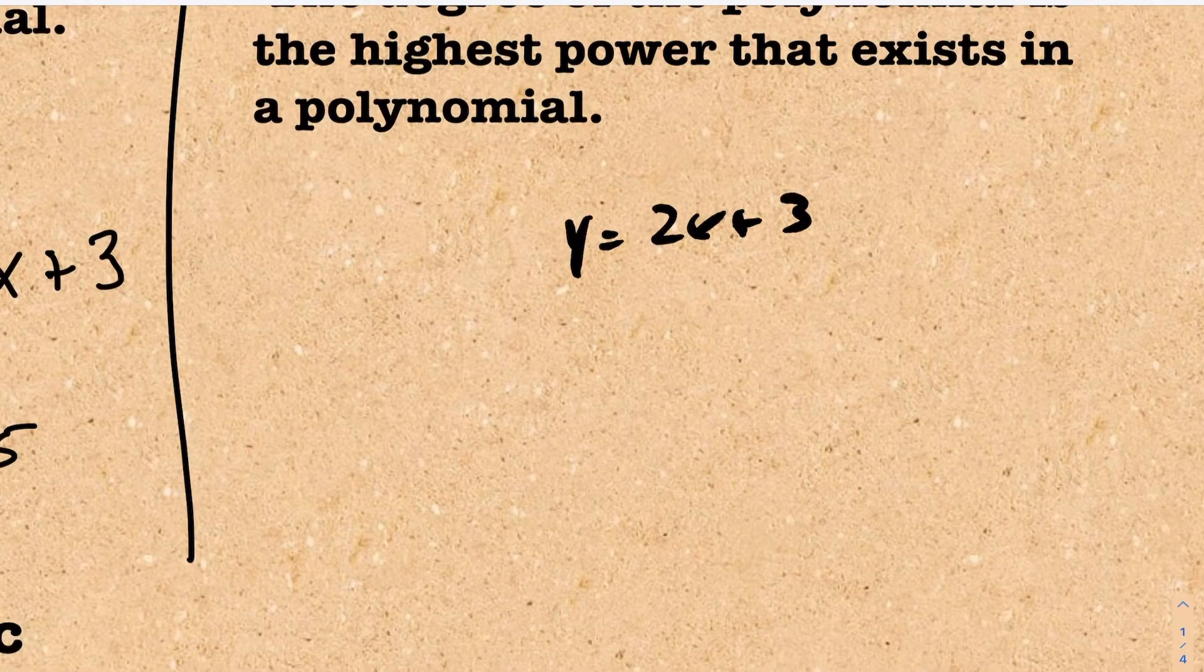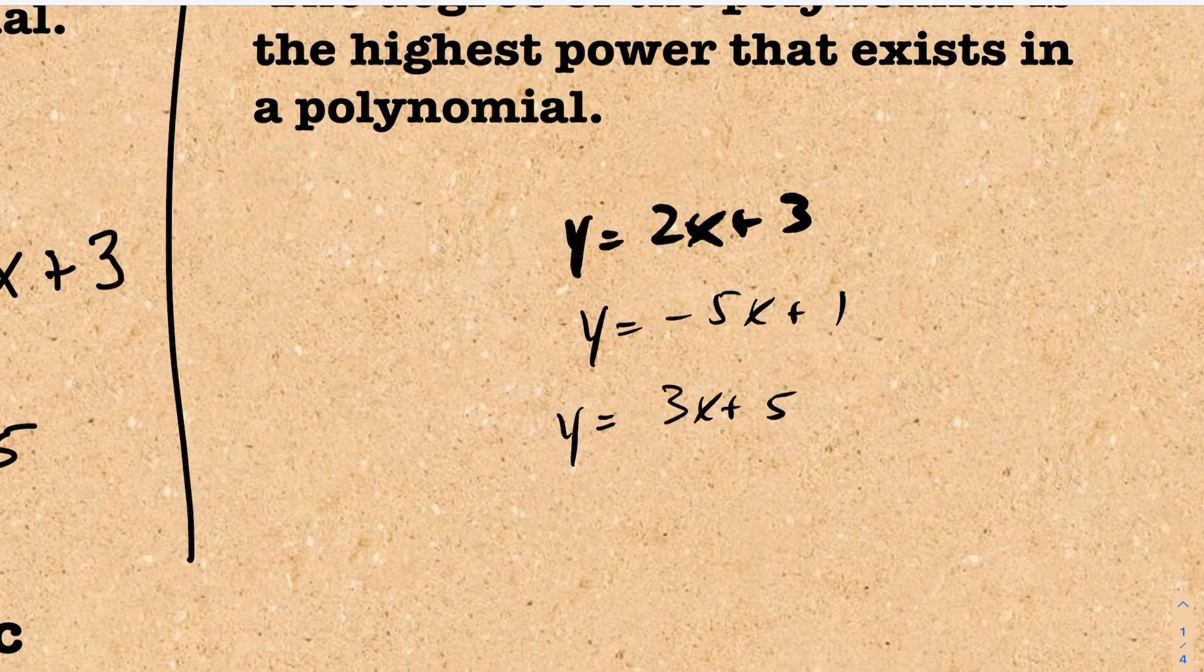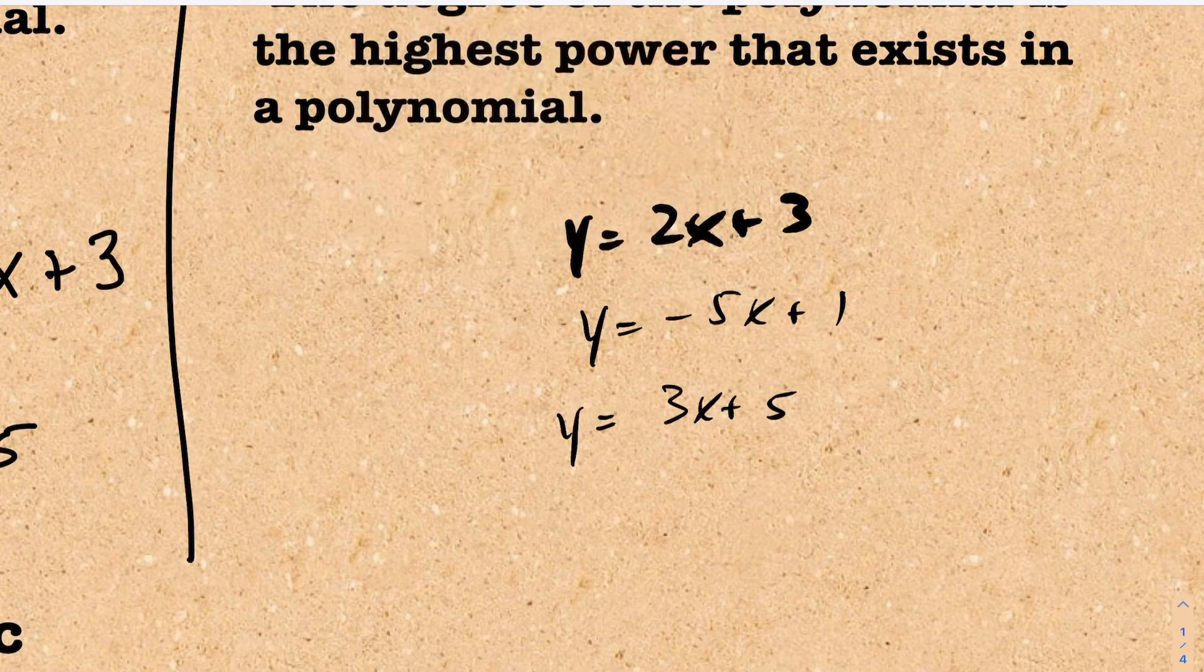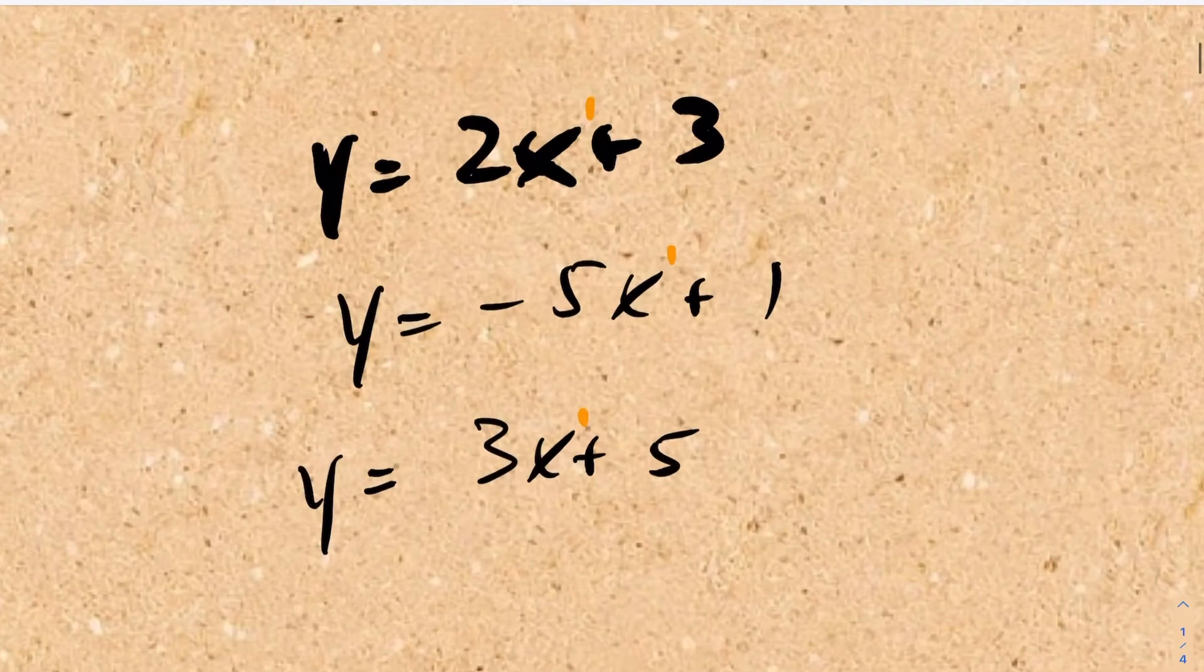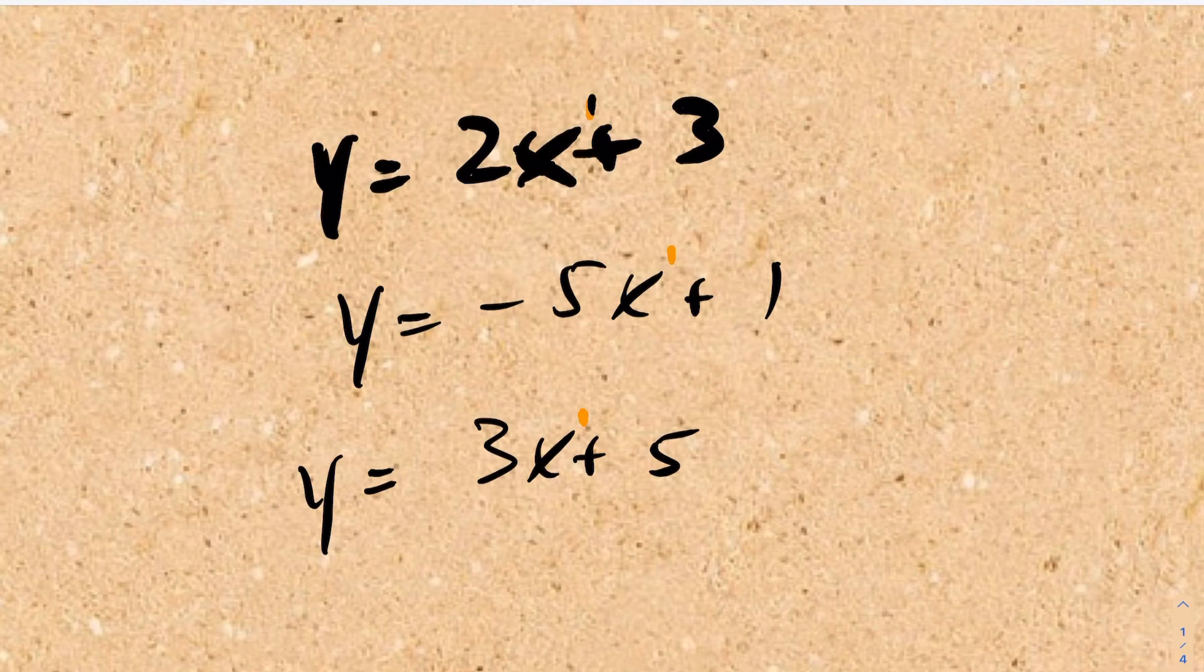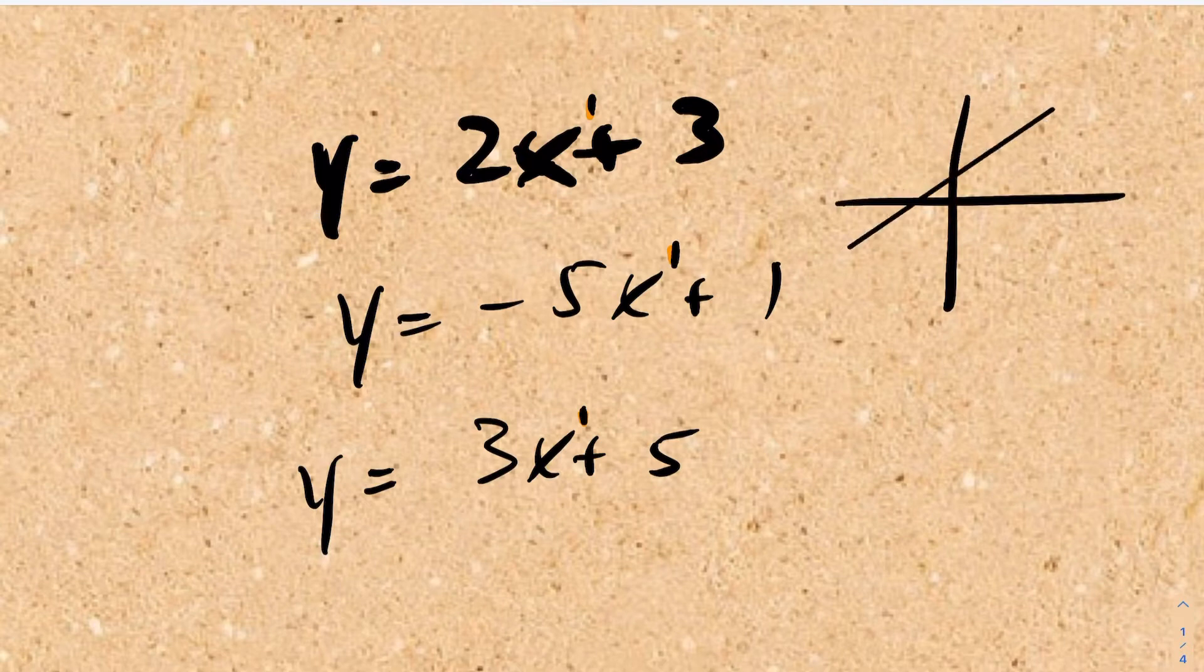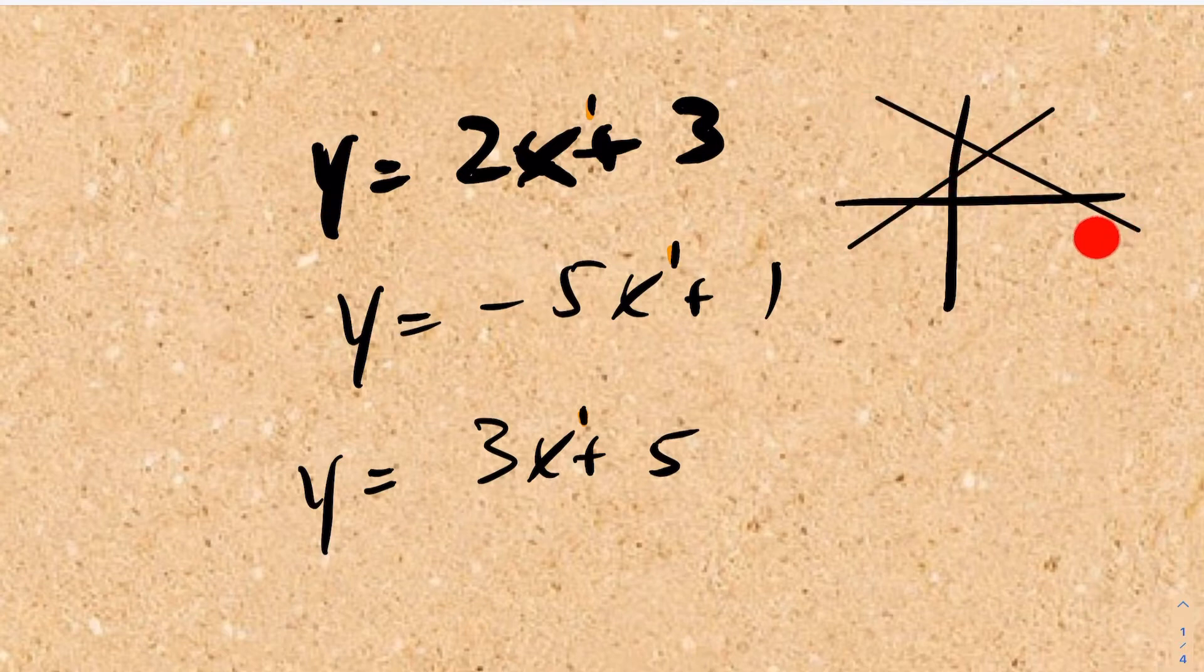The power on this x variable, although it's not written, is a 1. So these all have powers of 1 here for these x variables. Now these x variables, with the powers of 1, what they do is because of the power of 1, you have relations that if I go to graph it, it looks something like this or maybe something like this. Depending on the slope, sometimes it would be increasing, sometimes it would be decreasing.